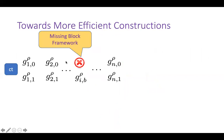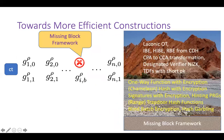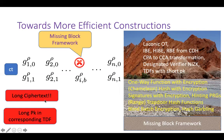As it turns out, constructions of many other related primitives also proceed in a very similar fashion — their security proofs also rely on the fact that the ciphertext is missing a block. That's what we call the missing block framework. All the primitives with their many applications rely on this missing block framework, so the technique is quite powerful. But because of this technique, the ciphertext became quite long, meaning trapdoor functions constructed from it would have a long public key. So it's better to look for other frameworks and techniques.